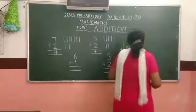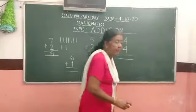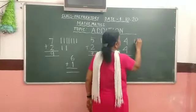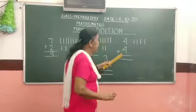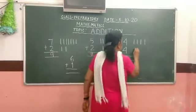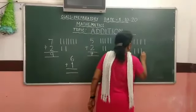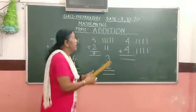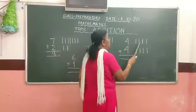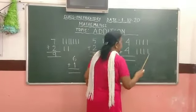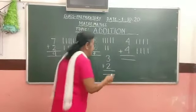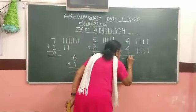Eight. Here we will draw four lines. One, two, three, four. And here again four lines. One, two, three, four. Now count children. One, two, three, four, five, six, seven, eight. Eight. And write here. Eight.